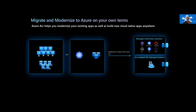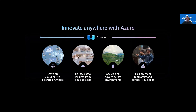You can also bring Azure services to any existing infrastructure, including other clouds you're using, to take advantage of cloud benefits anywhere — such as scalability, fast deployment, and always up-to-date cloud innovation. With Azure Arc, we're providing a consistent set of tools and services to extend cloud technology across your distributed infrastructure from cloud to edge. Azure Arc helps you do this by delivering four key capabilities: building cloud-native apps anywhere, leveraging data insights from the cloud to the edge, securing and governing your entire digital estate, and meeting your regulatory and connectivity needs. Let's dive into each of these pillars.